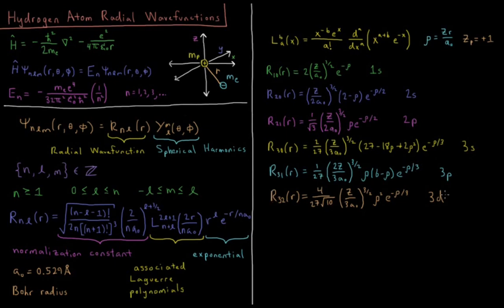r32, the 3d function, a constant times rho squared times e to the minus rho over 3.